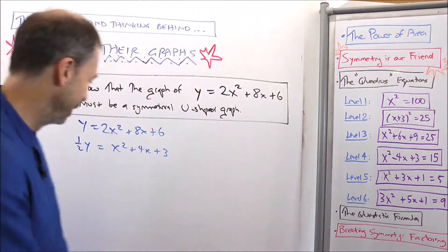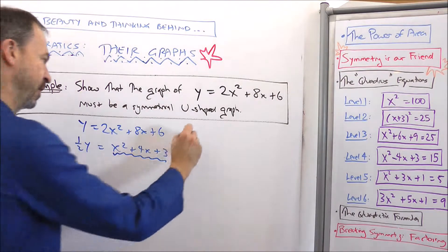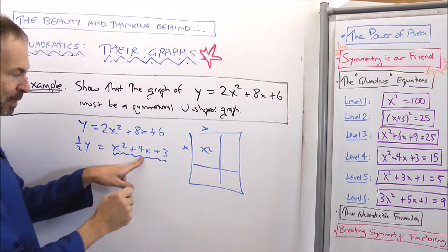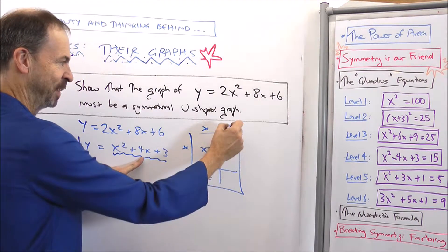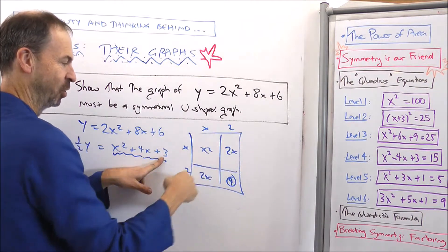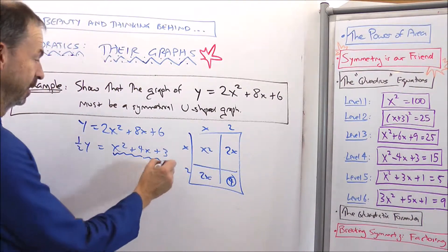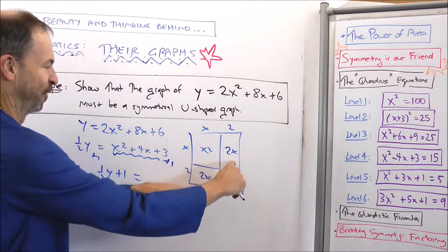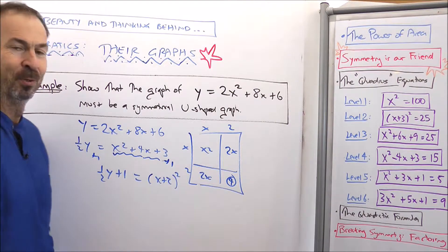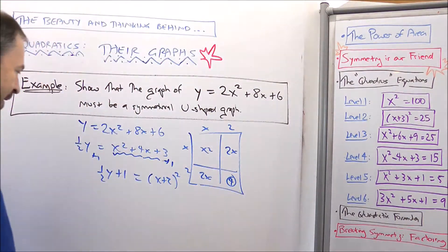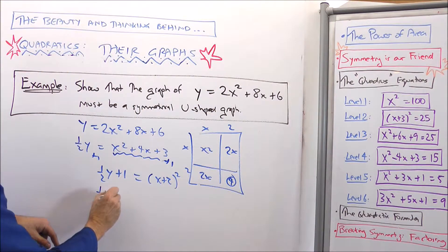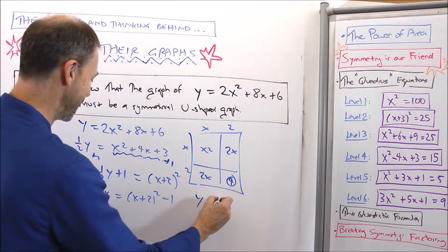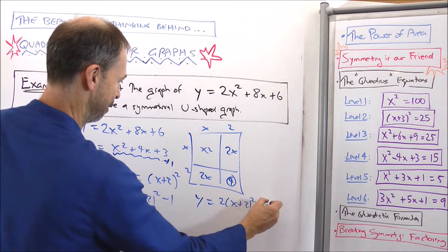Now let me apply the quadrous method on just that part. I want a nice square: x squared from x times x. For 4x, symmetrically that's 2x and 2x, meaning 2 and 2 in each direction. The missing number I want is 2 times 2 equals 4. I've got 3, so I add 1 to both sides: one half of y plus 1 equals x squared plus 4x plus 4, which is x plus 2 squared. Subtract 1: one half of y equals x plus 2 squared minus 1. Double everything: y equals 2 times x plus 2 squared minus 2.